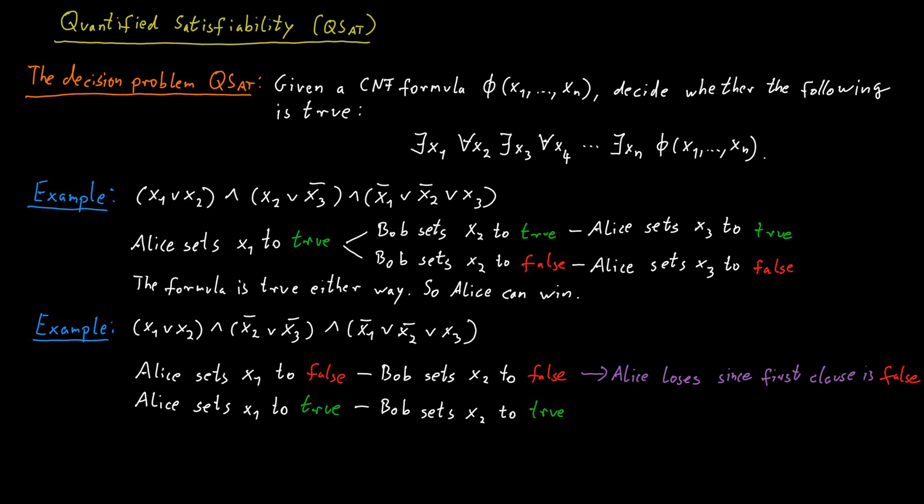But if she sets x3 to false, let's look at the third clause of the formula. x1 is true, so that doesn't help for the third clause. x2 is true as well, which doesn't help for the clause. And x3 is now false. So the third clause of the formula would remain false and therefore Alice loses the game. So no matter what she does, Bob can force a win for himself here. And therefore this is an example of a no instance for quantified satisfiability.